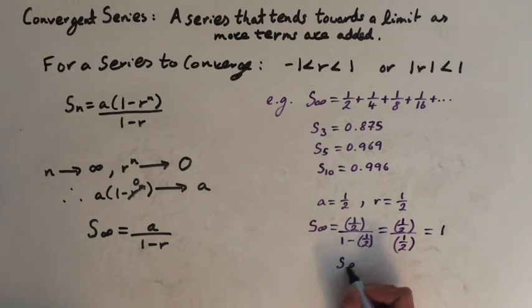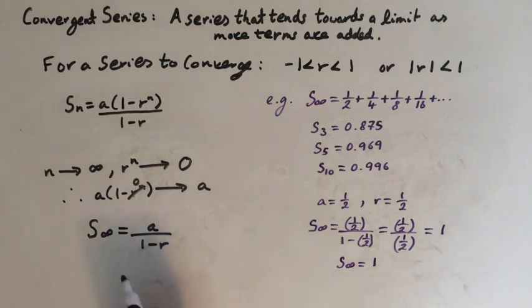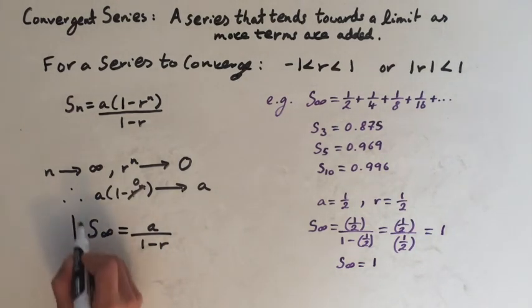So the sum of this series is 1, which is what we thought. So this formula is correct. This is the formula to find the sum of an infinite converging series.